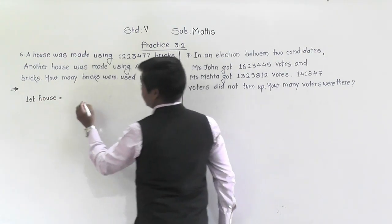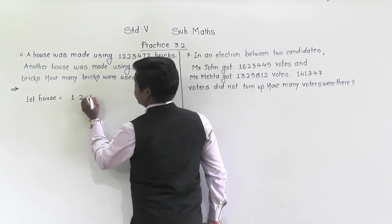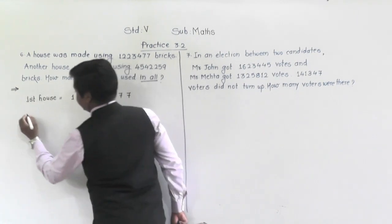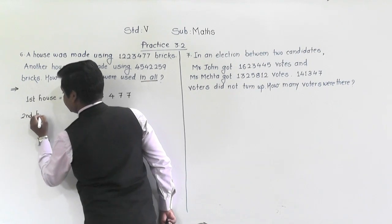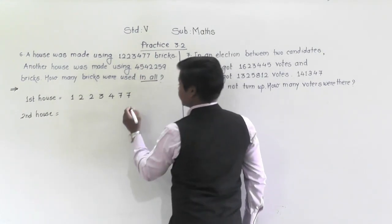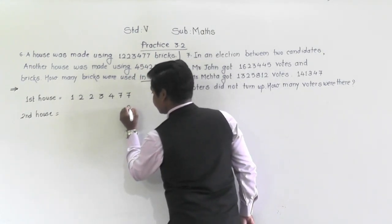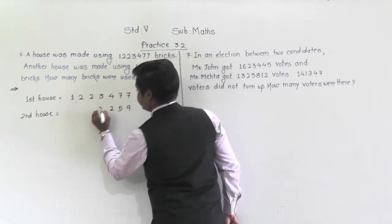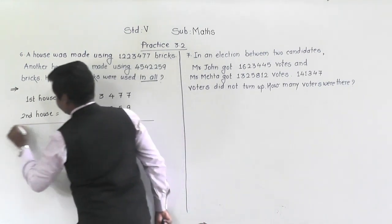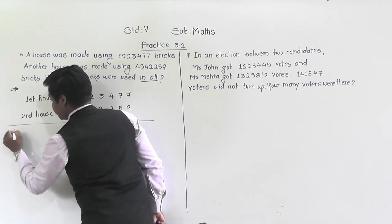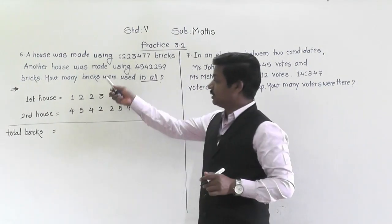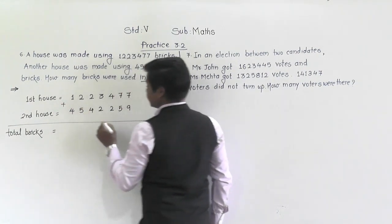how many bricks were used? 12 lakh 23,477. And to build the second house, 45,42,259 bricks were used. Let's write from the ones place. Total — how many bricks were used? That we have to find, so we need to do addition here.